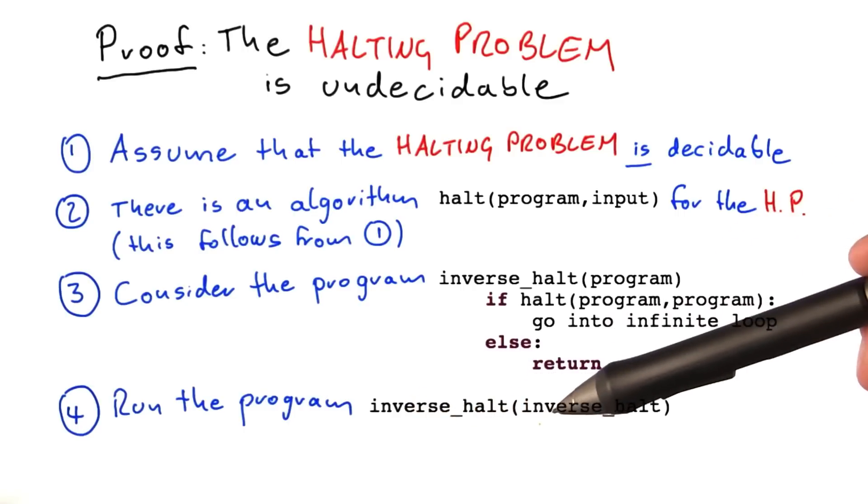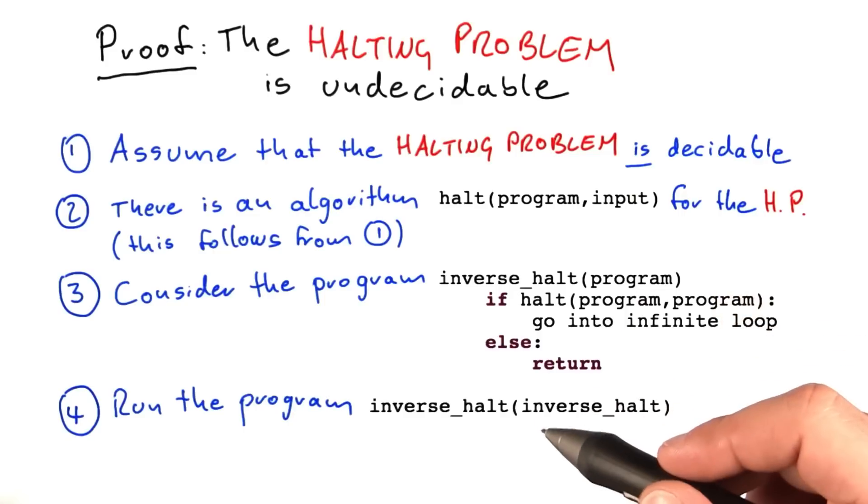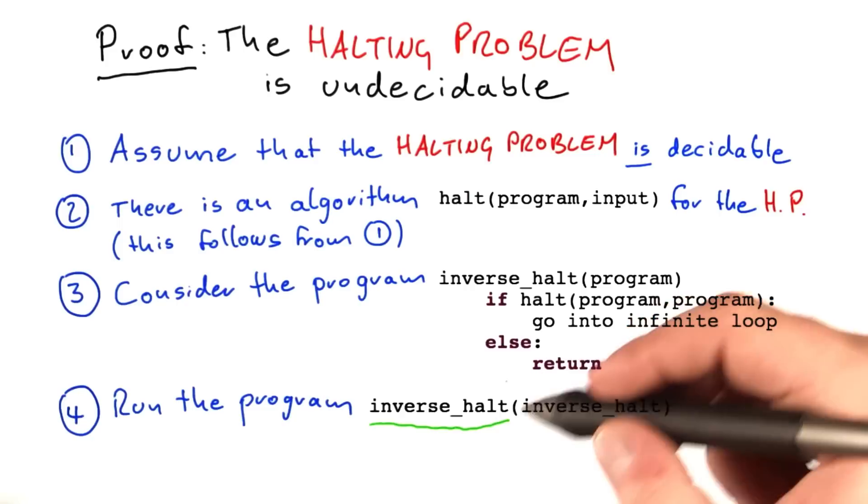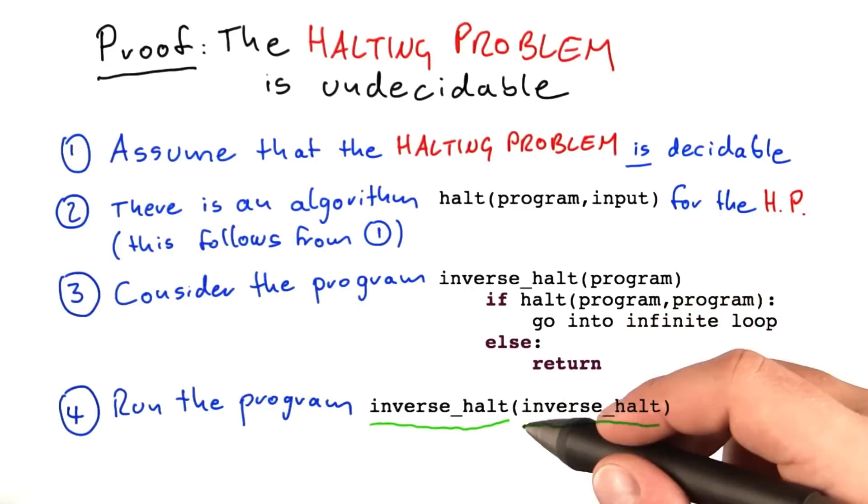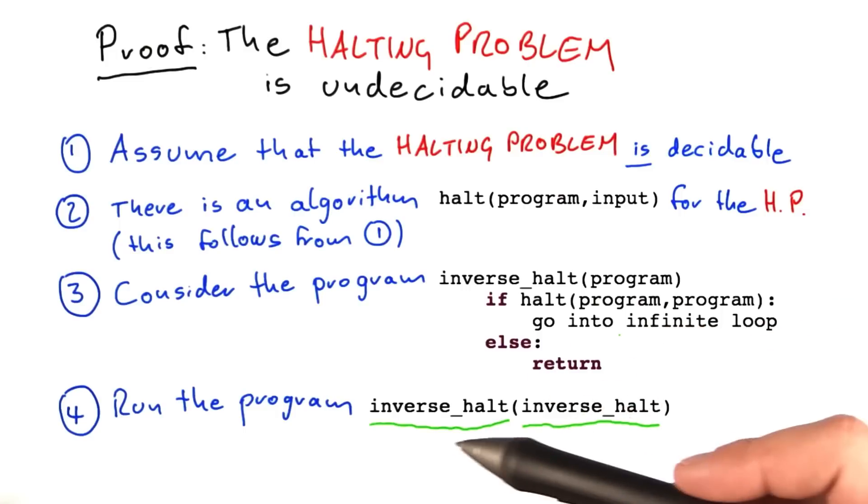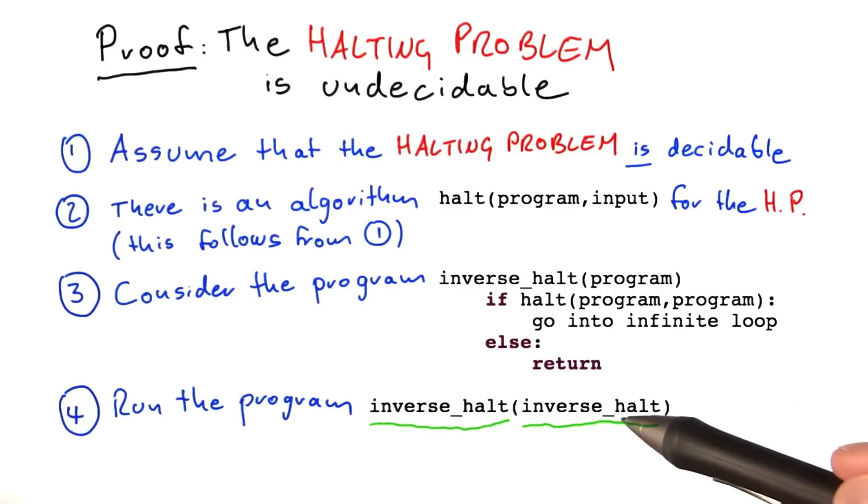We run inverse-halt with inverse-halt as an input. So it's kind of similar to up here. We consider inverse-halt in two ways. This one up here is the program inverse-halt that we actually run. And this here is inverse-halt, the source code of inverse-halt that we want to analyze. So it's similar to up here again. We're considering a program both as an actual algorithm, but also the description of that algorithm.